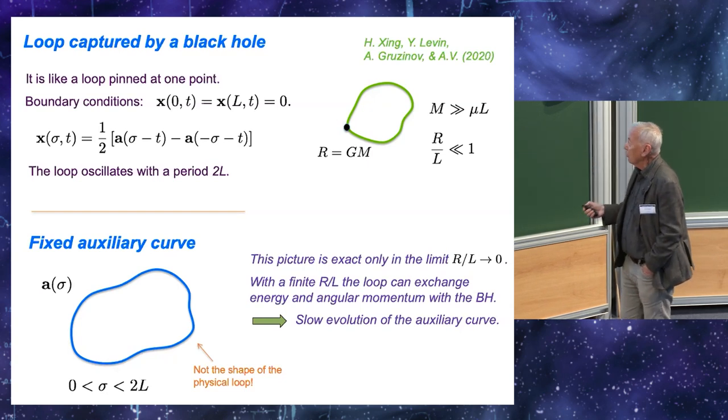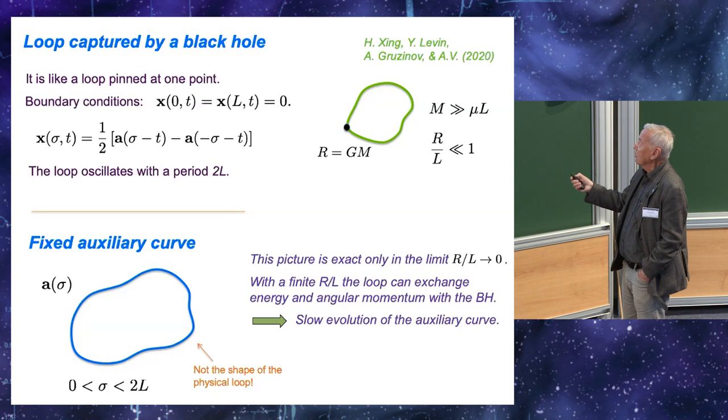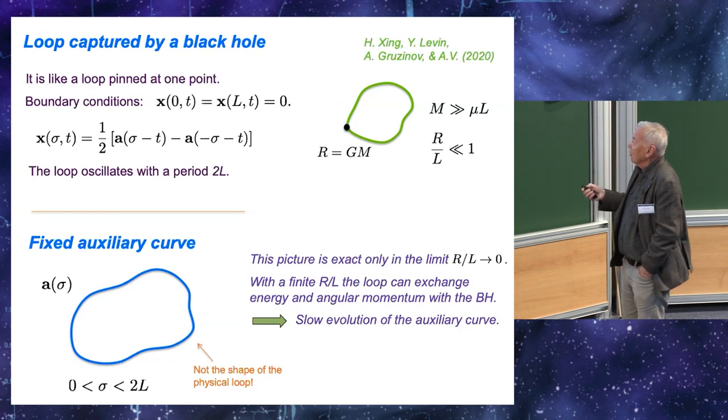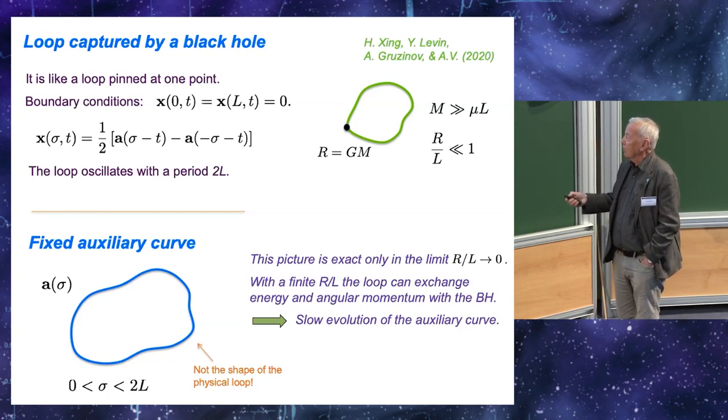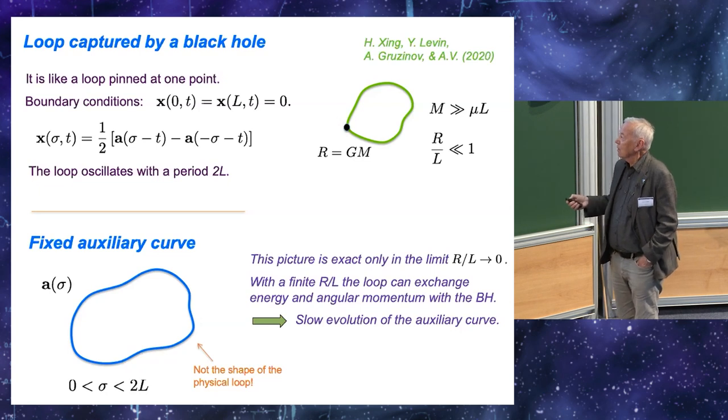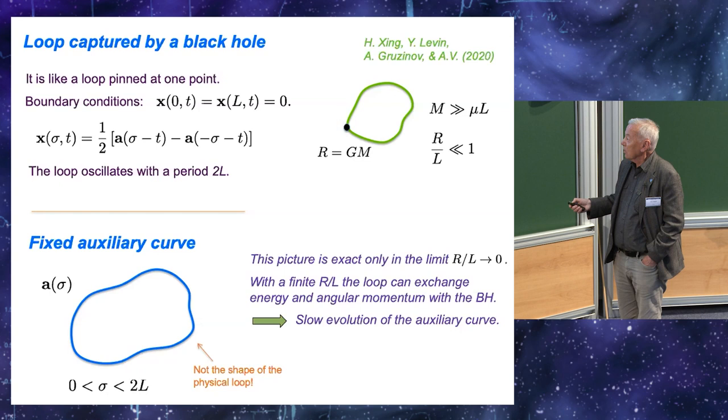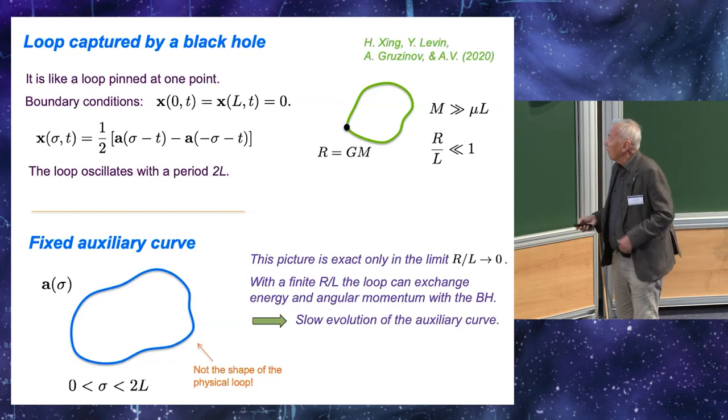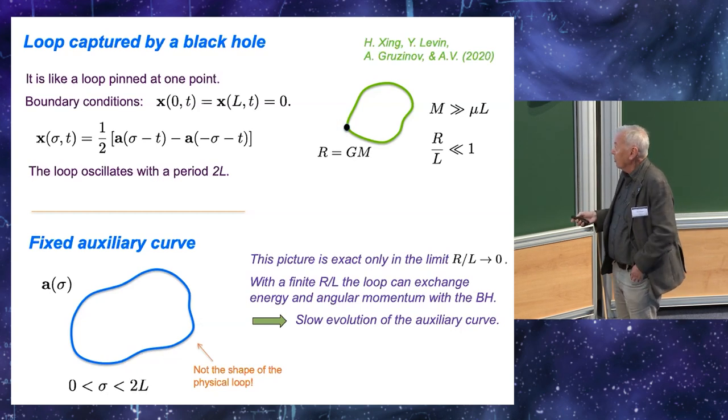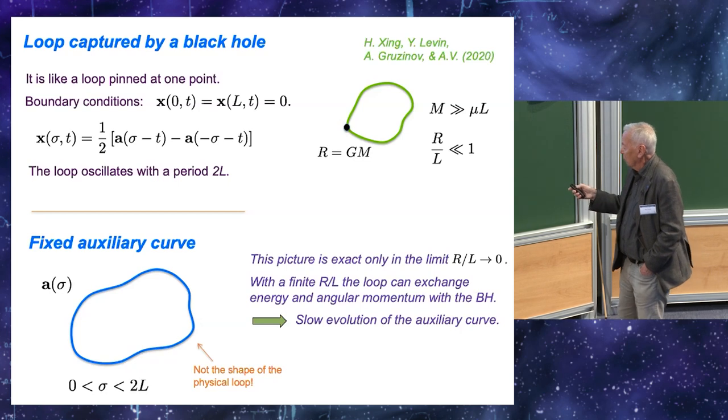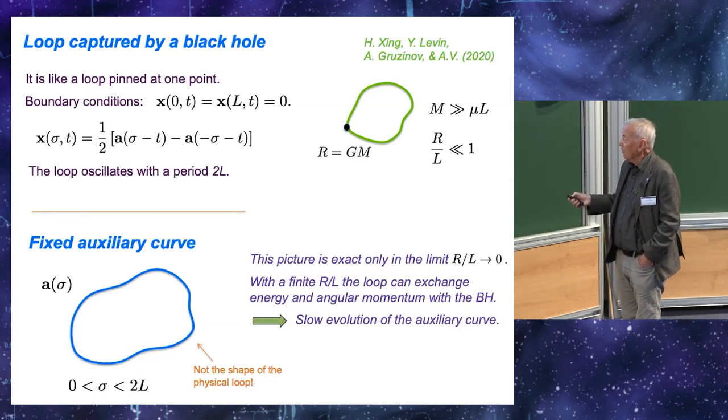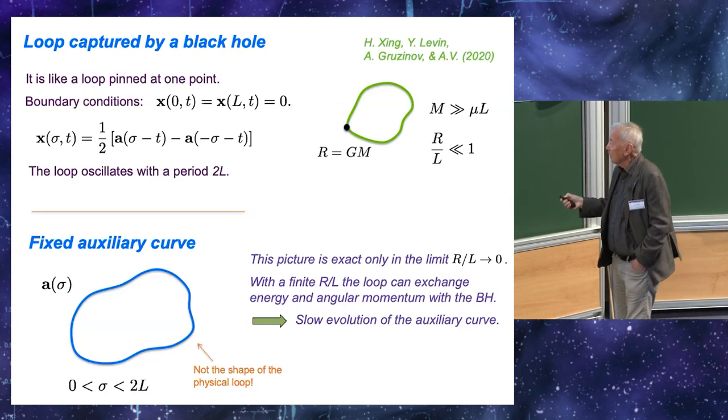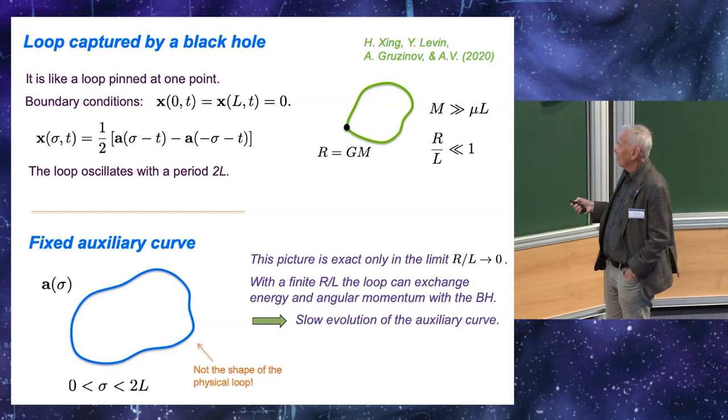The fact that we now have just one vector function describing the dynamics of the loop allows us to think about it in the following way. We take this vector function and plot it. Its length is 2L, where L is the invariant length, and this is just a fixed curve in three-dimensional space. So, its length is related to the length of the loop. It's twice the length of the loop, but the shape of this curve has little to do with the shape of the physical loop. But, this is a very useful object nevertheless, as we will see.